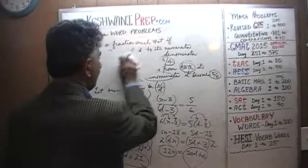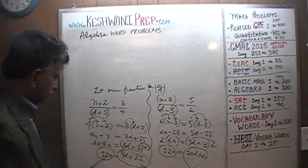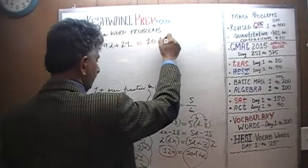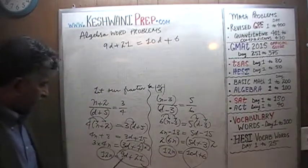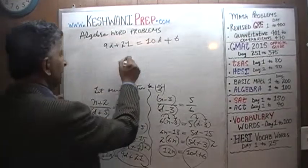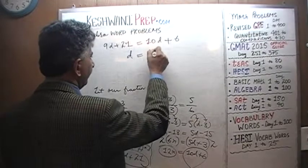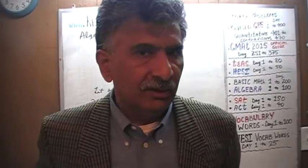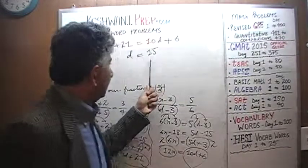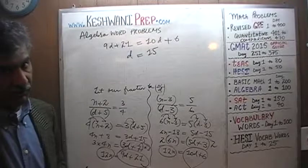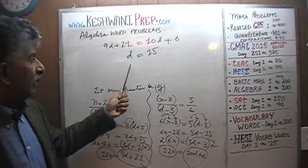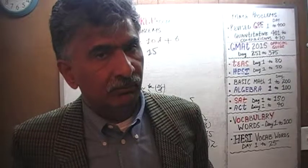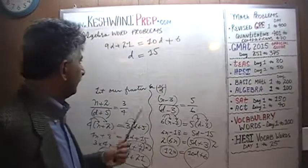So 9D plus 21 equals 10D plus 6. Bringing 9D to the other side: 10D minus 9D equals D, and 21 minus 6 equals 15, so D equals 15. This makes me a bit nervous — 15 is not a prime number — but perhaps the numerator will be prime, otherwise there's a potential for reduction since fractions must be in their most reduced form.